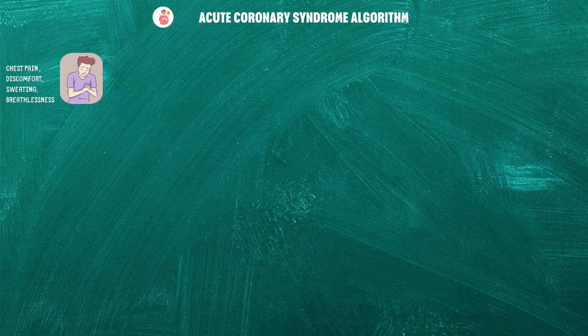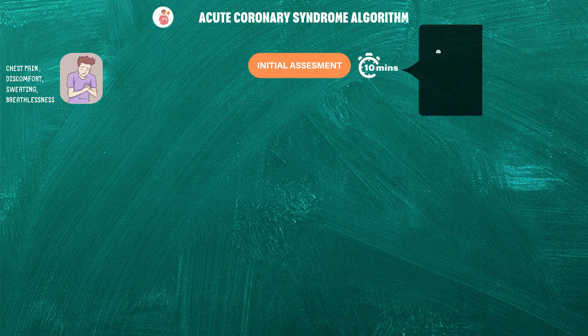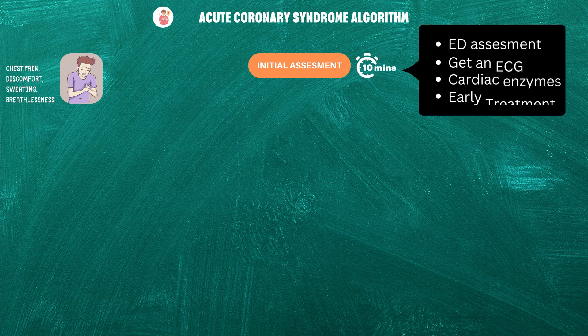The first step in this algorithm is the initial assessment of the patient. You have 10 minutes to evaluate the patient and give early treatment in the emergency department. In these 10 minutes, you have to complete the ED assessment, get an ECG, send all diagnostic tests including cardiac enzymes, and give early treatment.